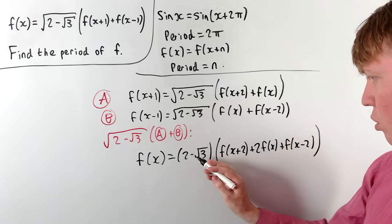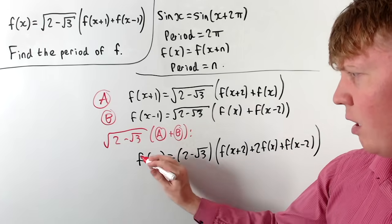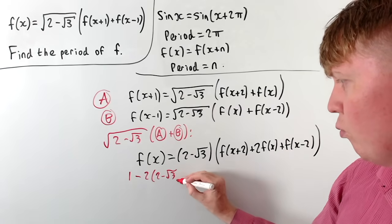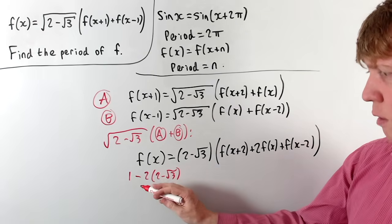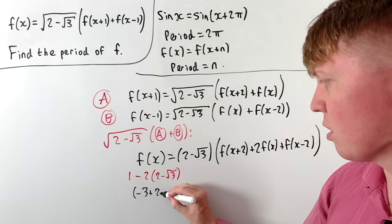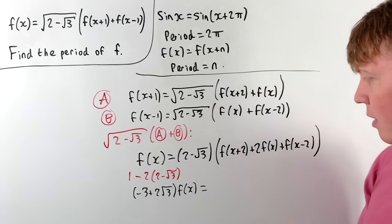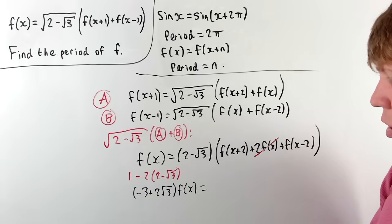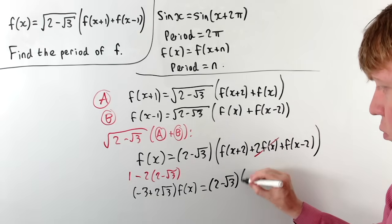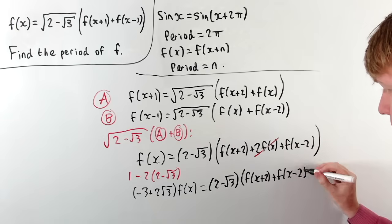We've got 2-√3 times 2f(x), so we take that over to the left hand side. That gives us 1 minus 2(2-√3) times f(x), which simplifies to (-3+2√3)·f(x). So on the left hand side we have (-3+2√3)·f(x), and on the right hand side we've just got (2-√3) times [f(x+2)+f(x-2)].